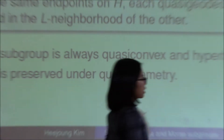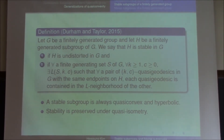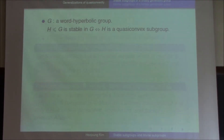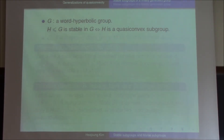Stability is preserved under quasi-isometry as well. This is a generalization of quasi-convexity because when G is a word hyperbolic group, H is stable if and only if H is quasi-convex. One direction is obvious, and if H is quasi-convex, then by hyperbolic geometry we know H is stable, because quasi-geodesics are close to geodesics in a hyperbolic space.